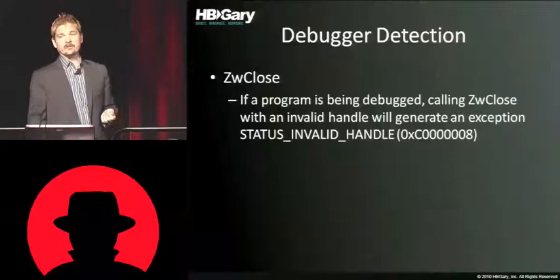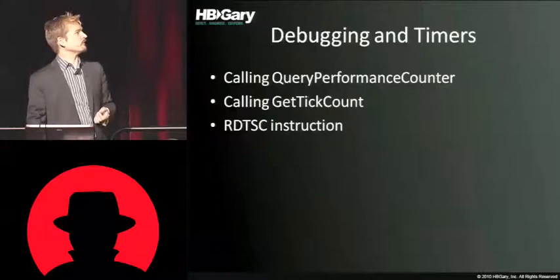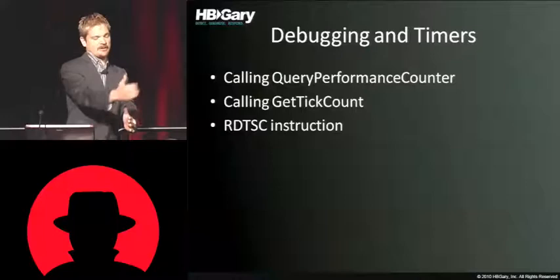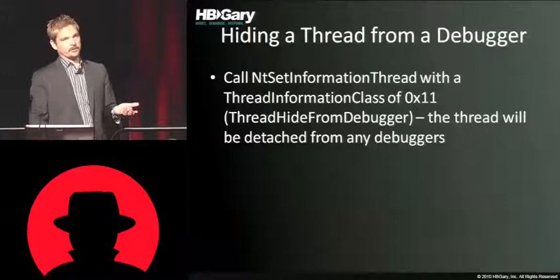ZwClose with an invalid handle will result in an exception if the program is being debugged — it's a non-obvious one. It's also worth mentioning the read timestamp counter (RDTSC): you can tell if you're being debugged if you're single-stepping and the timestamp counter is not being maintained, so too much time passes. If you do a search on the net, you'll find a lot of open source code that does a lot of this.